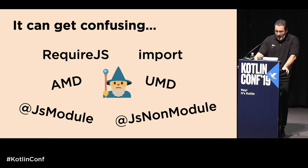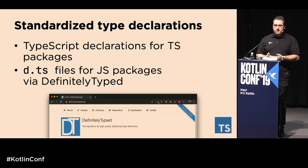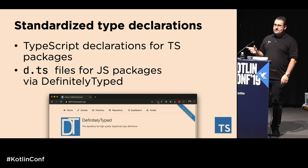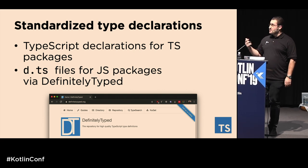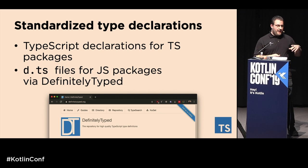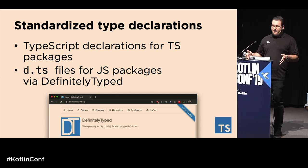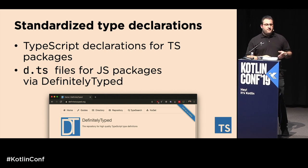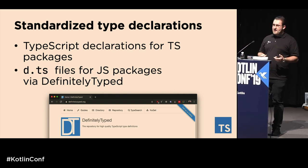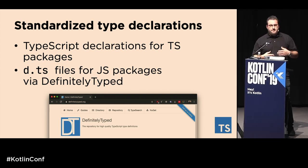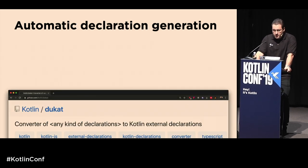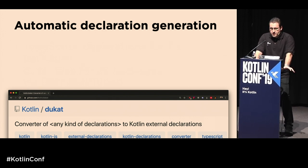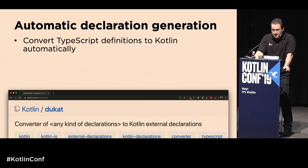The Kotlin JS team has figured out this is a headache, and there is a solution on the way that you can already try today. The good thing about the JavaScript ecosystem is that there's a de facto standard for writing external declarations: TypeScript declarations. If a package is written in TypeScript, it natively has type-safe headers. If not, there are usually community-contributed type-safe headers available.